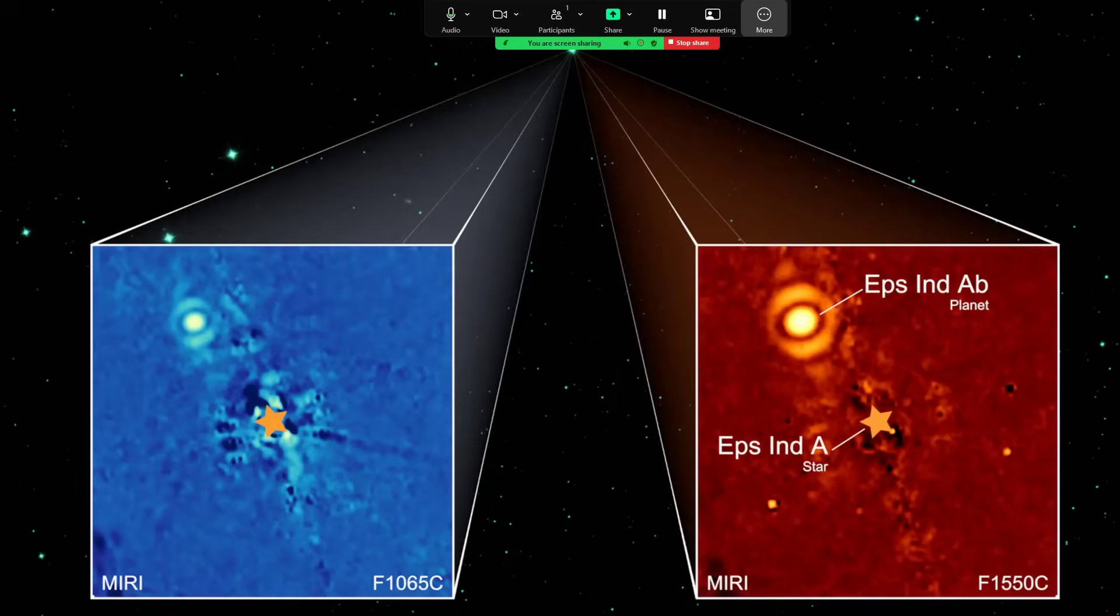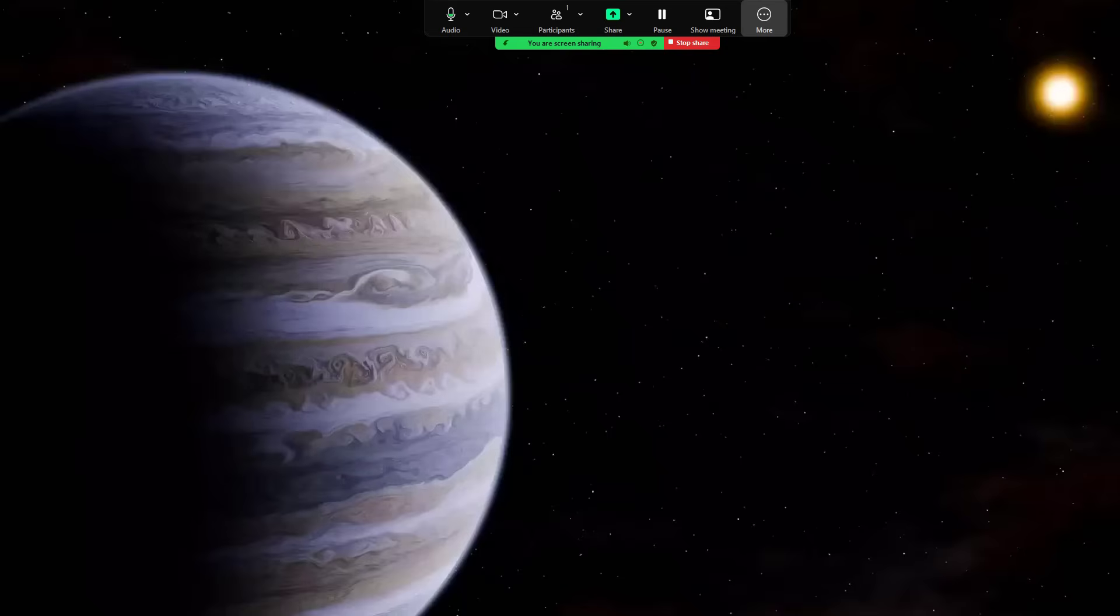James Webb with the MIRI instrument, and these are at 10.5 microns and 15.5 microns, showing again the central star marked with a large graphic star, and then the actual planet shown as a bright disk around it. Quite a lot of disturbance and what looks like dust as well, but that's another story. And so we have an artist's impression of this super Jupiter planet orbiting around the main star.